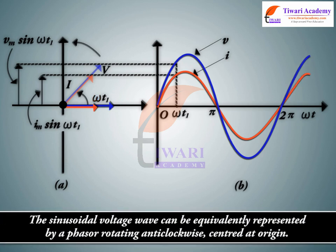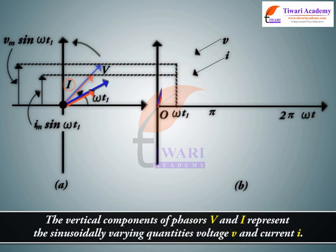The sinusoidal voltage wave can be equivalently represented by a phasor rotating anticlockwise, centered at origin. The vertical components of phasors V and I represent the sinusoidally varying quantities voltage V and current I.